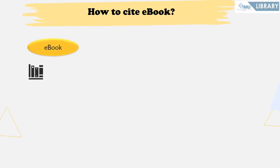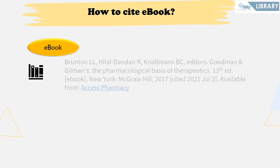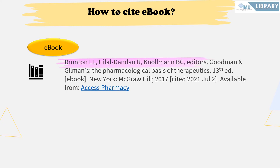To cite the e-book, start with the editor's name in the order as it appears on the title page. Write only six authors' names; if more, follow with 'et al.' Then add the title of the book, capitalizing the first word and any proper nouns, ending with a period. Add the edition number using the abbreviation 'ed.' followed by a full stop. Then add the word 'e-book' in square brackets and a full stop.